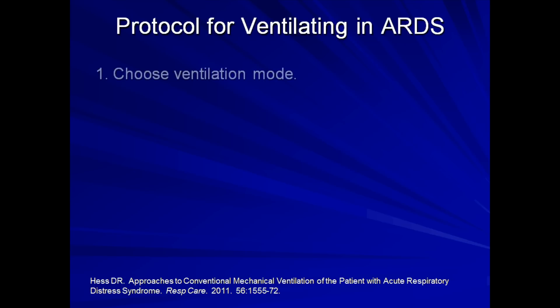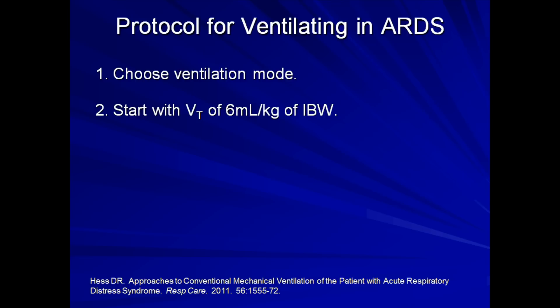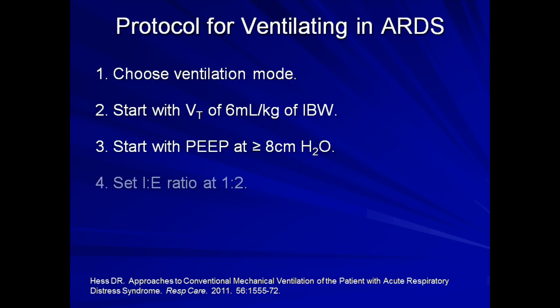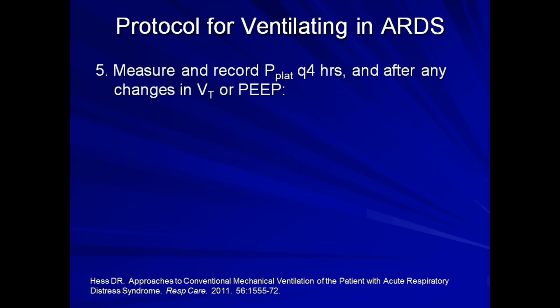Step 1: choose a ventilation mode, typically either assist control or SIMV. Step 2: start with a tidal volume of 6 mL per kg of ideal body weight. Step 3: start with PEEP at greater than or equal to 8 cm of water. Step 4: set the I to E ratio at 1 to 2. Step 5: measure and record the plateau pressure every 4 hours and after any changes in tidal volume or PEEP.